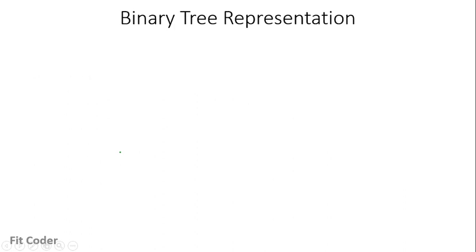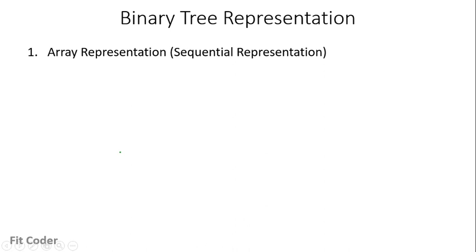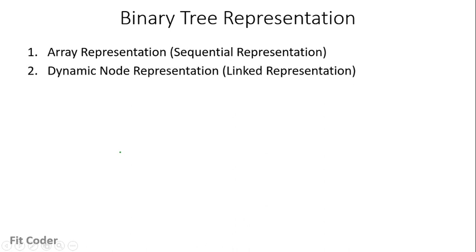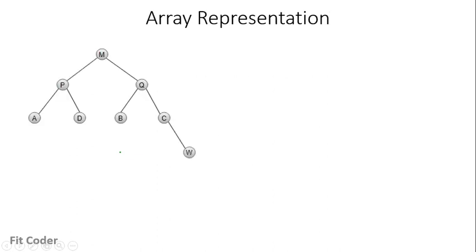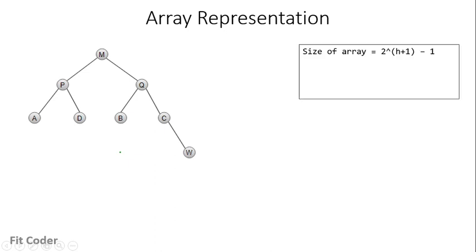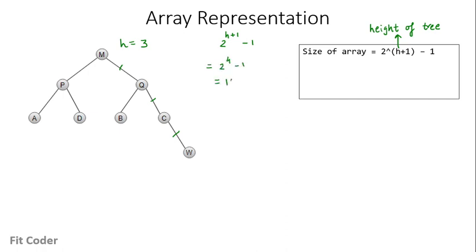Now let's see how we can represent a binary tree. There are two ways: first, the array form of representation, also known as sequential representation, and second, dynamic node representation or linked list representation. For array representation, given a tree, the first step is to take an array whose size equals 2 raised to the power (h+1) minus 1, where h is the height of the tree — that is, the height of the root node.